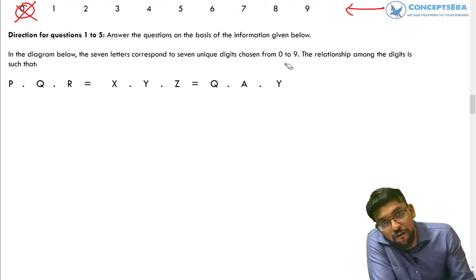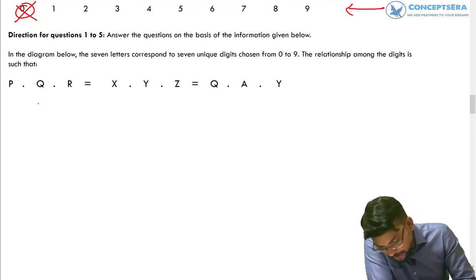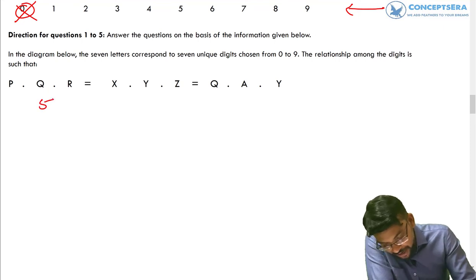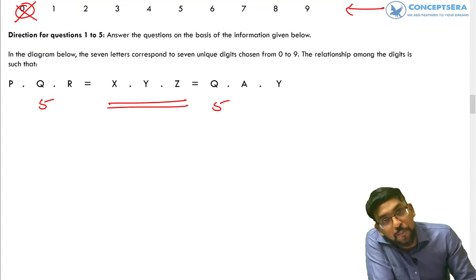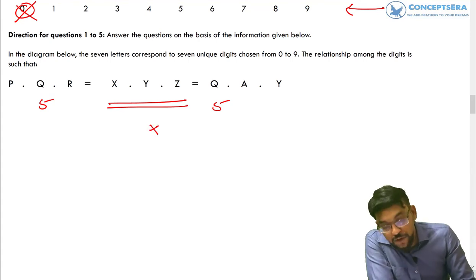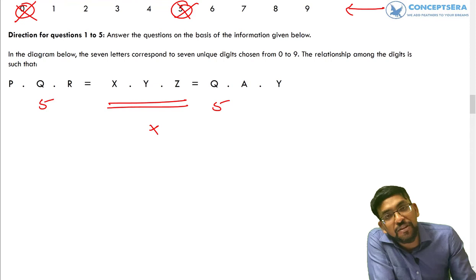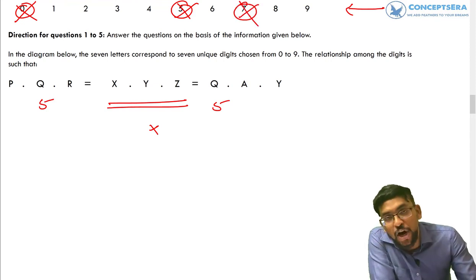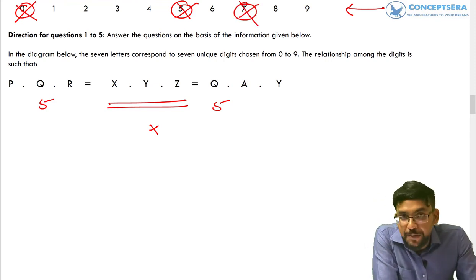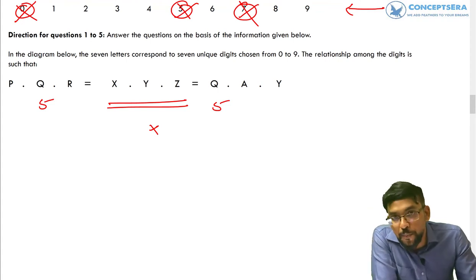Similarly, we cannot use five, because if we use five we can make two products multiples of five but we cannot make the third product a multiple of five. We can also eliminate seven, because there is no multiple of seven that works across all three products. So zero, five, and seven are the three excluded digits.